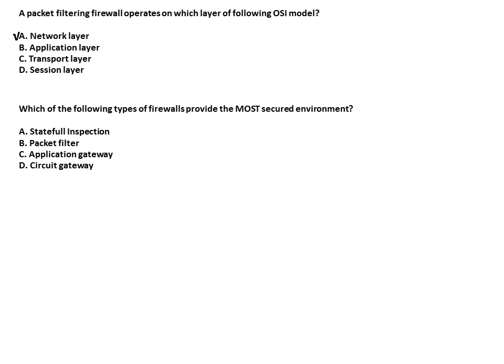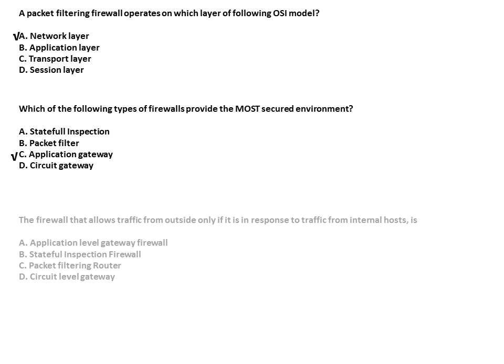Which of the following types of firewall provides the most secured environment? The answer is application gateway — it works at the application layer of the OSI model and hence provides the most secured environment. The firewall that allows traffic from outside only if it responds to traffic from an internal host — the answer is stateful inspection firewall.